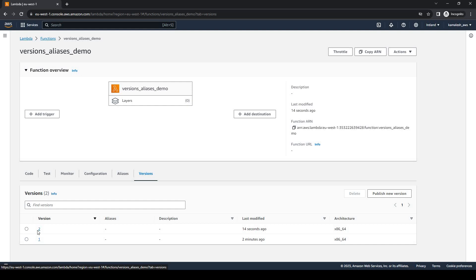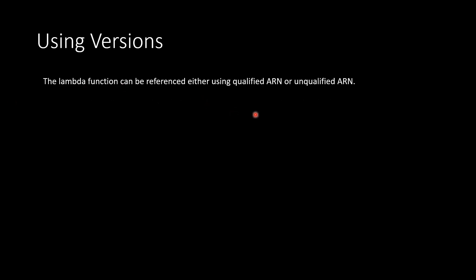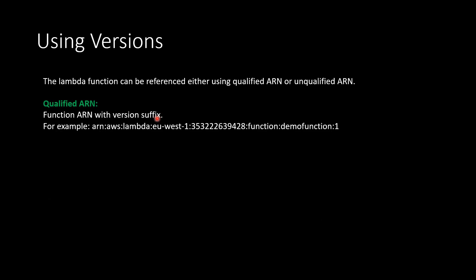If we go to versions now we can see we have two versions. So how do we access these different versions? To refer to different versions we can use either a qualified ARN or an unqualified ARN. A qualified ARN is the function ARN with a version suffix. For example, at the end of the ARN we have a colon followed by the version number. So if we want to access a specific version we can give the version number at the end — this is known as a qualified ARN.